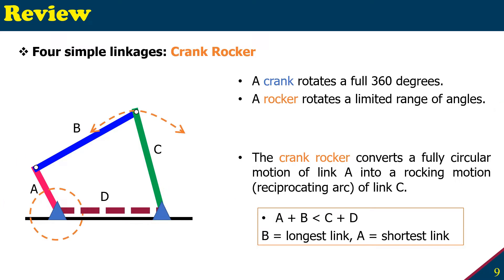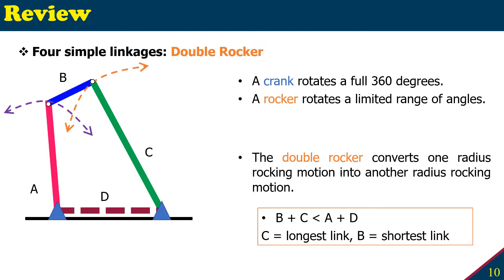Let's move to the next one. Next type is the double rocker. Double rocker means that none of the arms, the input and output, will have a 360 degree rotation by a certain limit of rotation. That's why you have double rocker.